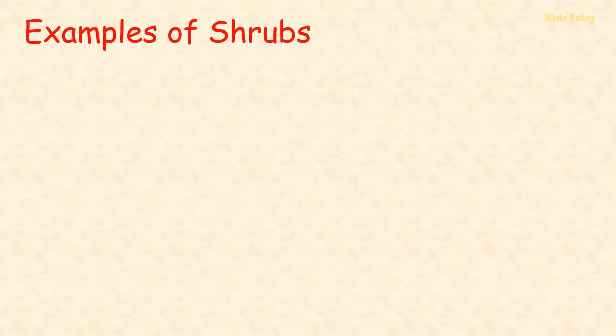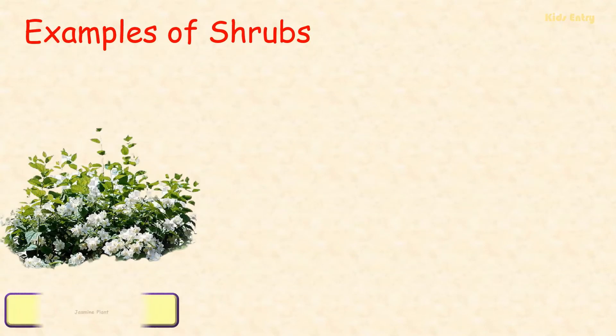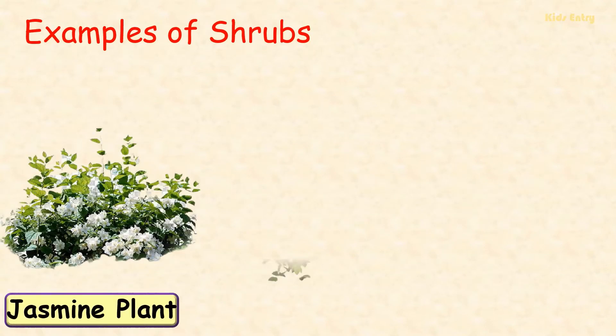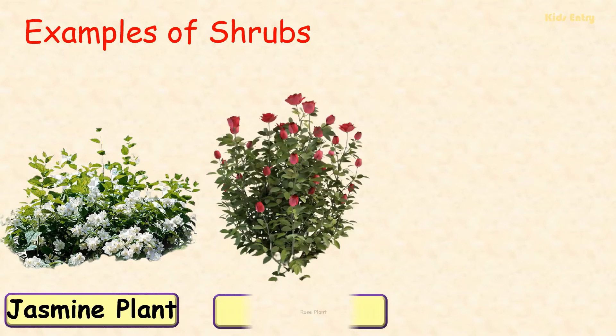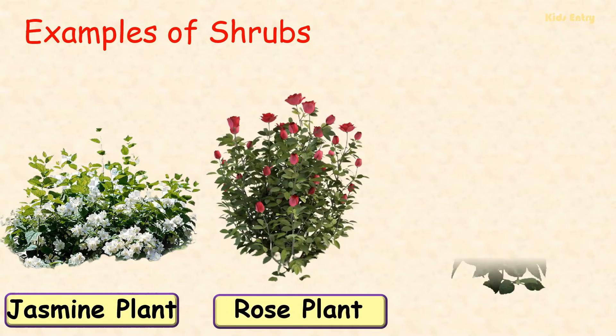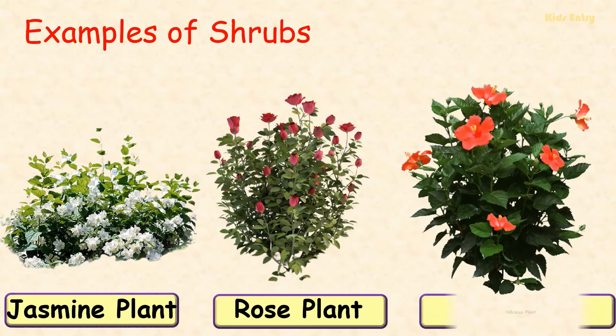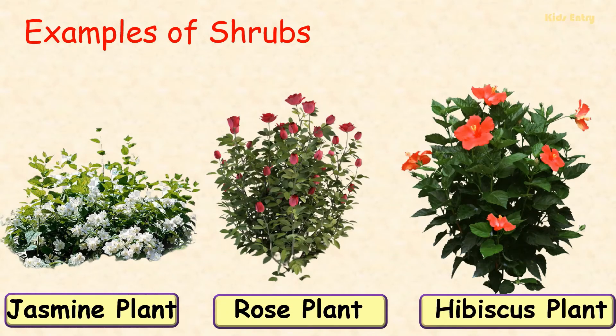Examples of shrubs: Jasmine plant, Rose plant, Hibiscus plant.